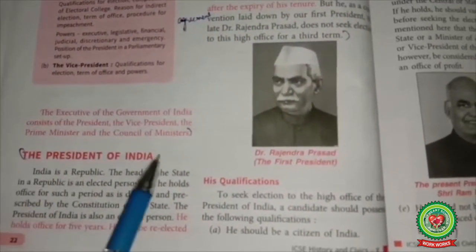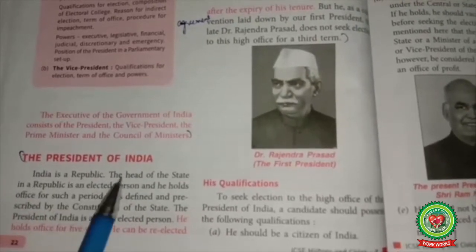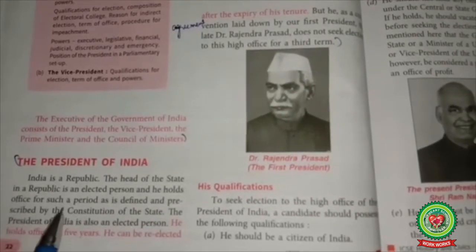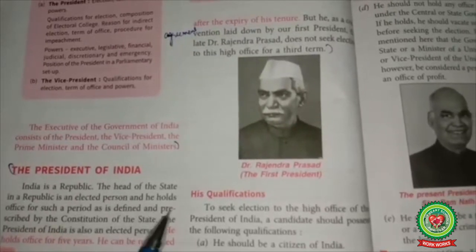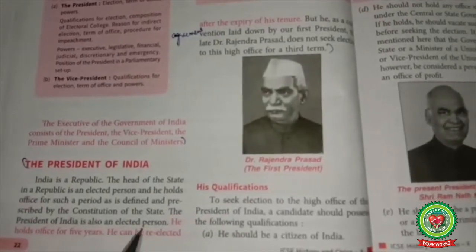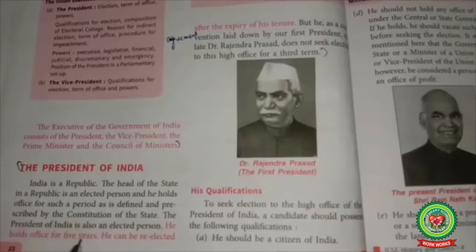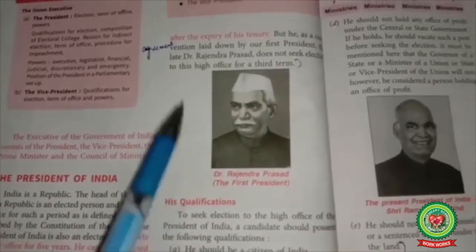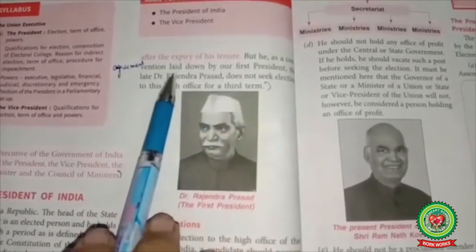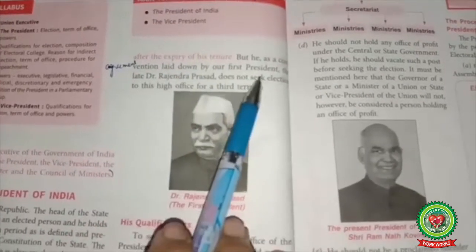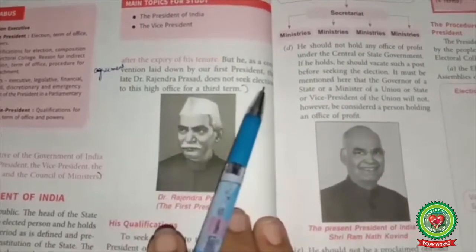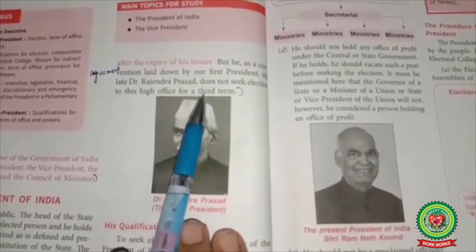India is a republic. The head of the state in a republic is an elected person and he holds office for such a period as is defined and prescribed by the constitution of the state. The President of India is also an elected person. He holds office for five years and can be re-elected after the expiry of his tenure. But as a convention laid down by our first president, the late Dr. Rajendra Prasad, no candidate seeks election to this high office for a third term.